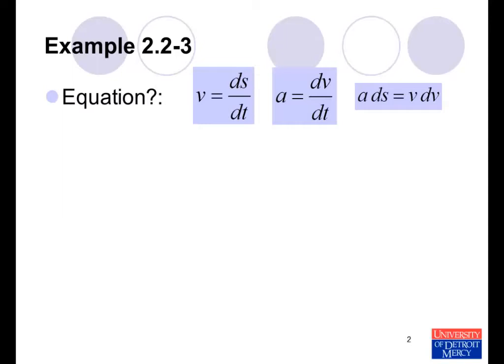In these rectilinear kinematics problems, these are the three basic equations that we're going to use. We have acceleration as a function of s. We have the initial velocity, the final velocity, and we want to find the stopping distance. If we look at these three equations, the one that relates the things that we have and the things we want to find is this one: a ds = v dv. It has acceleration, which we know. It has position, which we're trying to find. And it has velocity, for which we know the initial and final velocities.